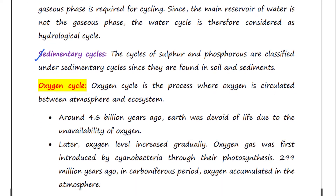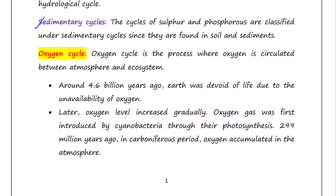Today we will talk about the oxygen cycle. The oxygen cycle is the process where oxygen is circulated between the atmosphere and the ecosystem. Around 4.6 billion years ago, Earth was devoid of life due to the unavailability of oxygen.